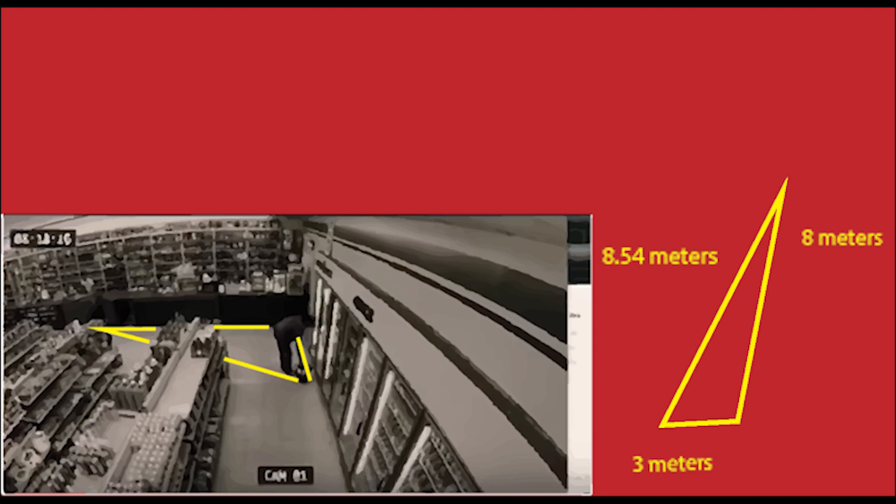We get 8.54 meters as the hypotenuse, or the distance he traveled. Now we have to double that distance because he went back and forth in 0.9 seconds.